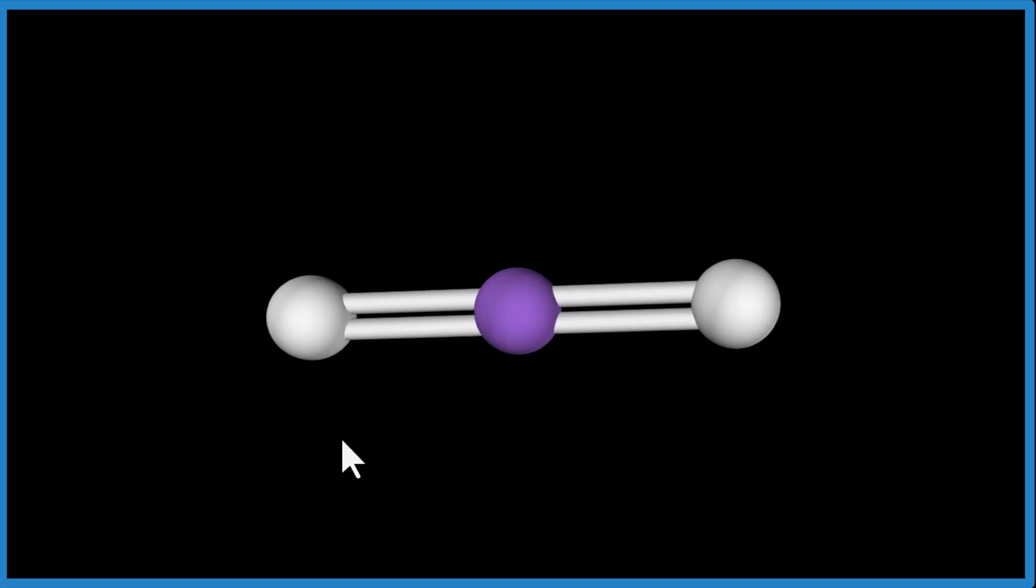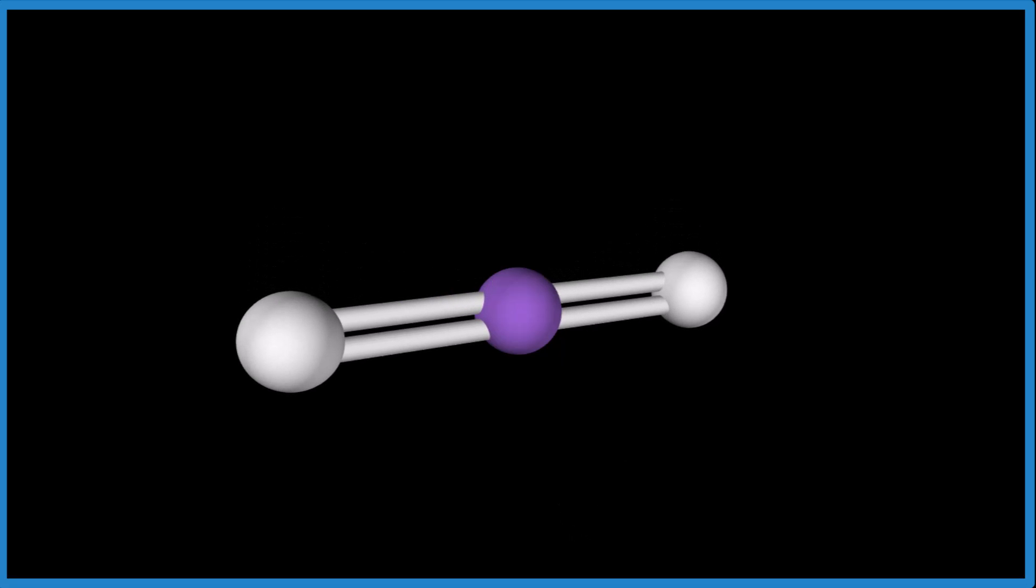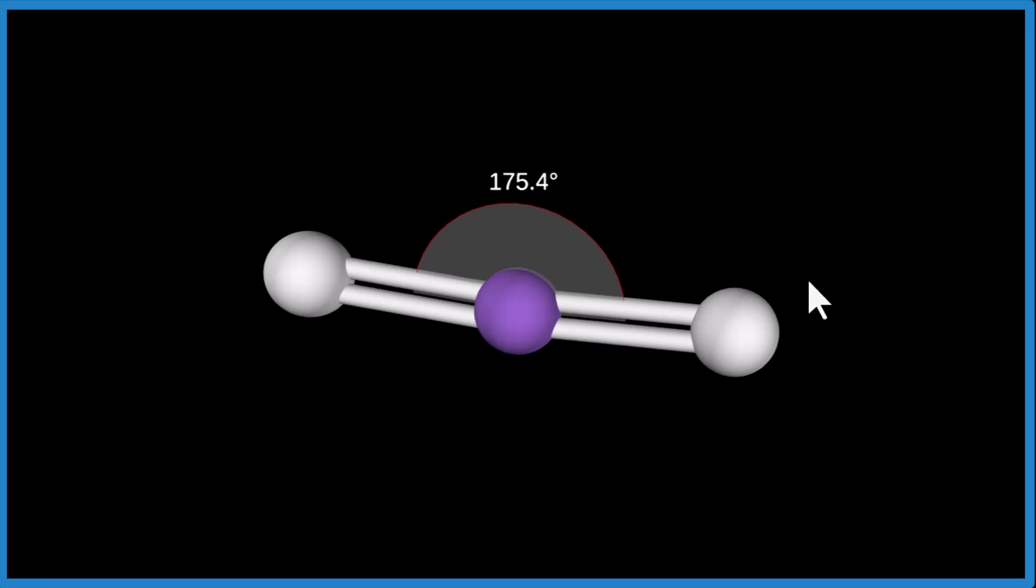These atoms here, which have their electron cloud, they're pushing each other away. So we end up with that linear molecular geometry and that bond angle of 180 degrees.